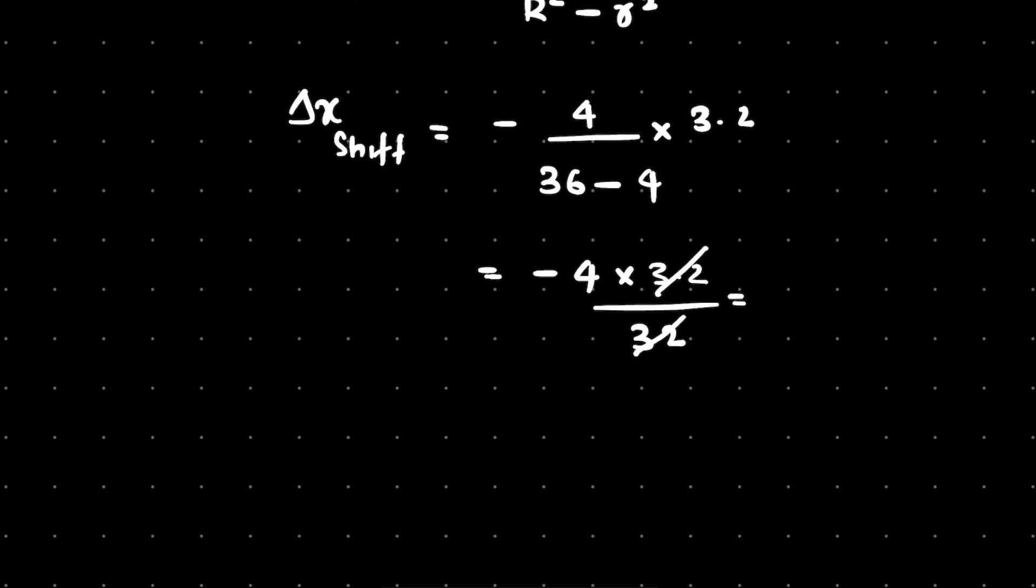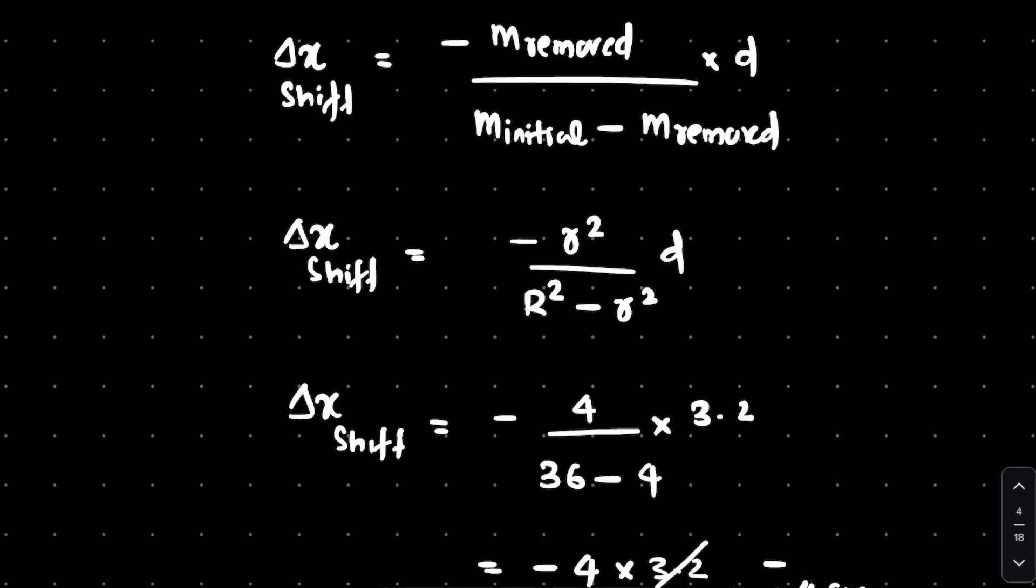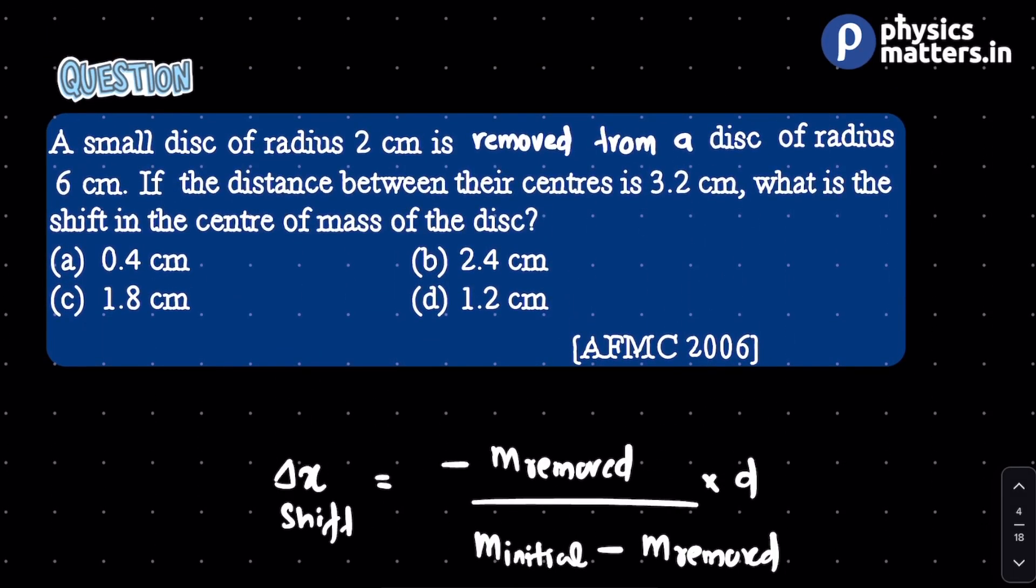32 and 3.2 cancel, so this is going to be 4 upon 10, which is 0.4 cm minus. What does the minus mean? Minus means the shift is in the opposite direction. So the correct answer is 0.4 cm.